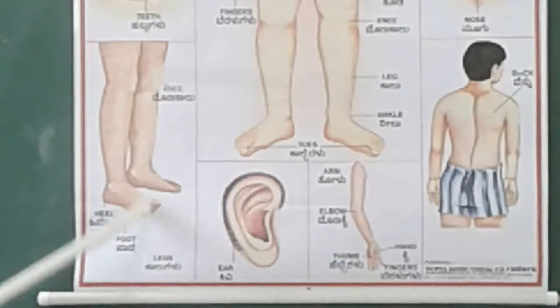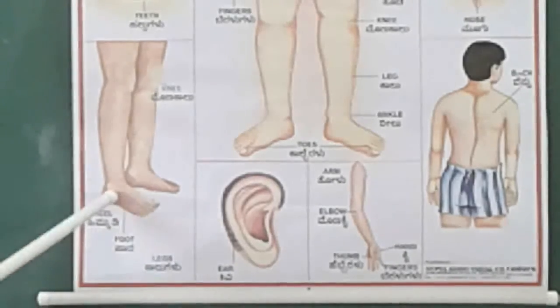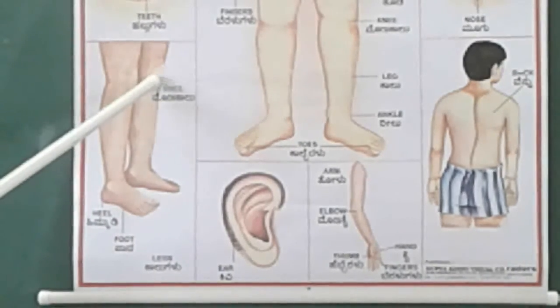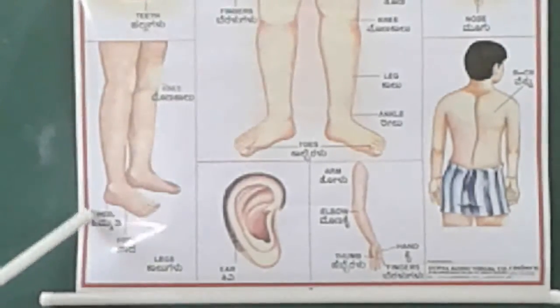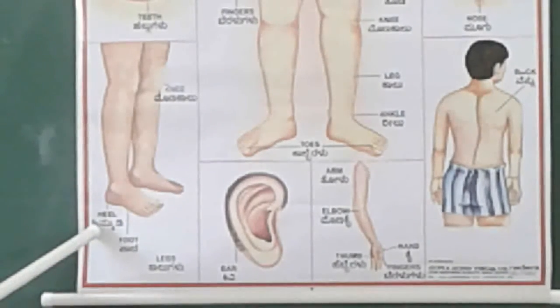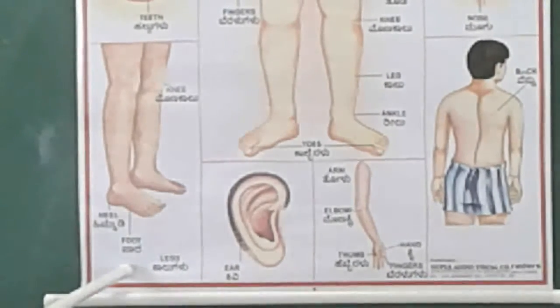These are legs. Legs have different parts. Starting with the knee — this area is called the knee. And this back area is called the heel. And this area is called the foot.